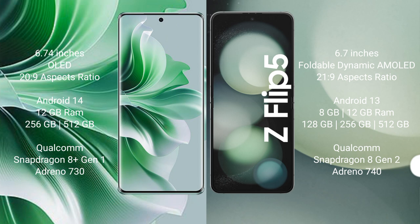Oppo Reno 11 Pro features a Qualcomm Snapdragon 8 Gen processor with Adreno 730 GPU. Samsung Galaxy Z Flip 5 comes with 8GB RAM and 256GB or 512GB internal storage, powered by a Qualcomm Snapdragon 8 Gen 2 processor with Adreno 740 GPU.